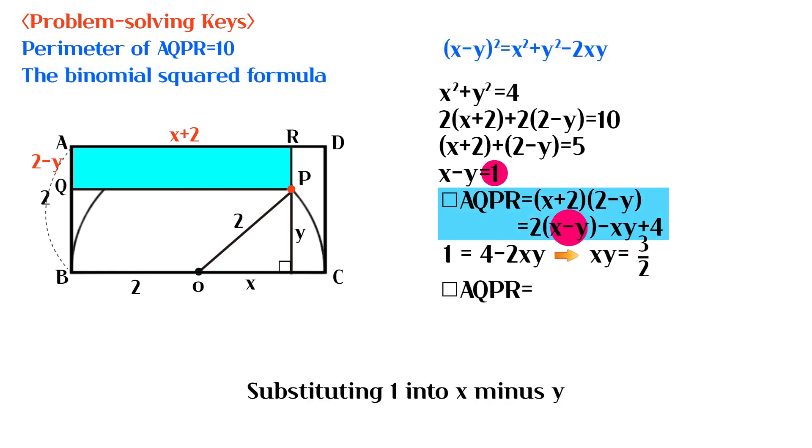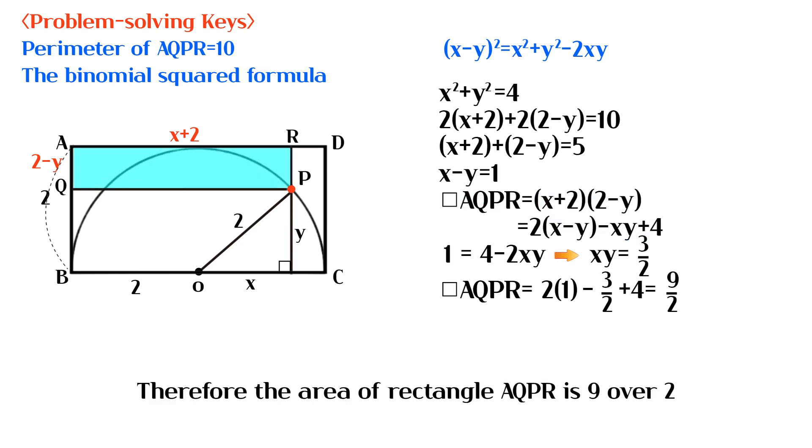Substituting 1 into x minus y and 3 over 2 into xy, we solve the equation and get that the area of rectangle AQPR is 9 over 2.